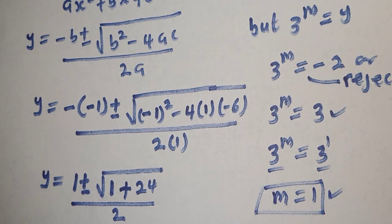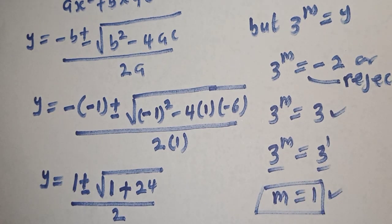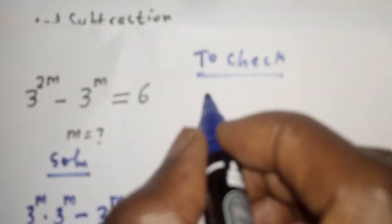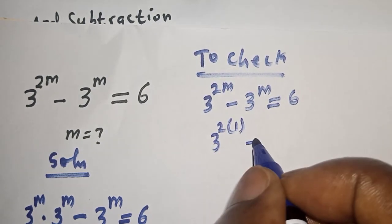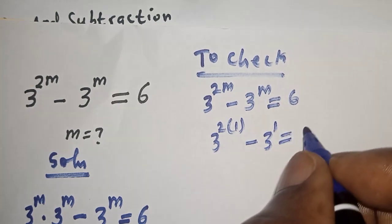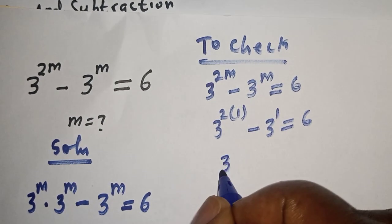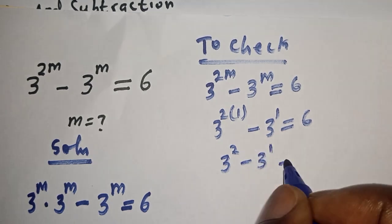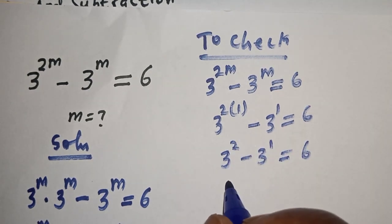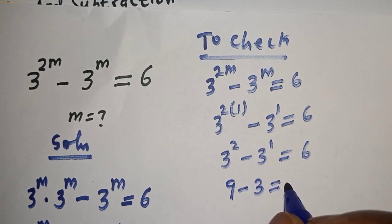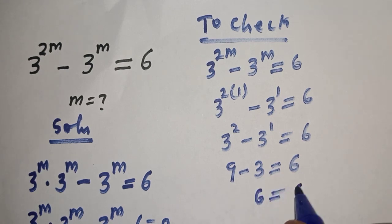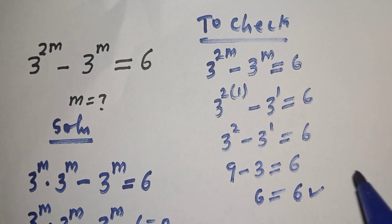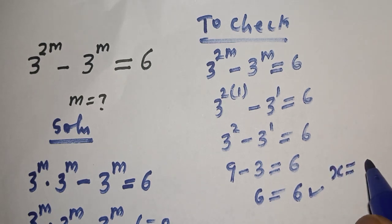This is the final answer. We can check to confirm if our answer is right. When m equals 1: 3 raised to power 2 times 1, minus 3 raised to power 1 must equal 6. This is 3 raised to power 2 minus 3 raised to power 1, which is 9 minus 3, equal to 6. The left-hand side, 6, equals the right-hand side, 6, which satisfies the given equation at m equal to 1.